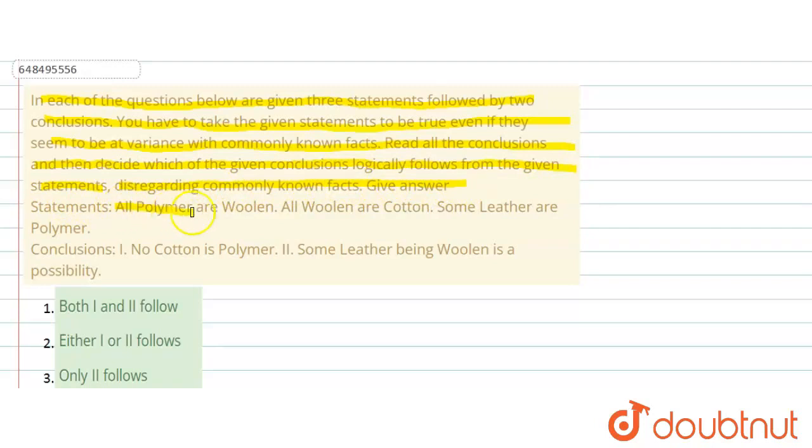Statement is: all polymer are woolen, all woolen are cotton, some leather are polymer. Conclusion part: no cotton is polymer, some leather being woolen is a possibility.